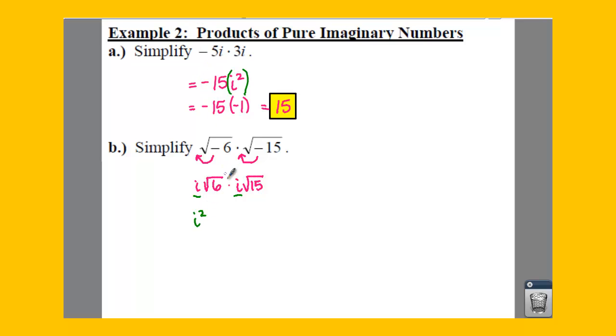And then we can multiply anything that is underneath our radicals, 6 and 15, and we can make that 90. And what we need to do from here is simplify a little bit further. So we can make our i squared negative 1.